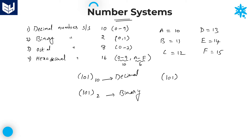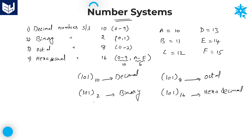Similarly, if you want to represent an octal number, the base value must be 8. If the base is 8, that represents an octal number. If the base is 16, then it represents a hexadecimal number. So: base 10 is decimal, base 2 is binary, base 8 is octal, and base 16 is hexadecimal. In this way, we can identify which number system a given number belongs to.